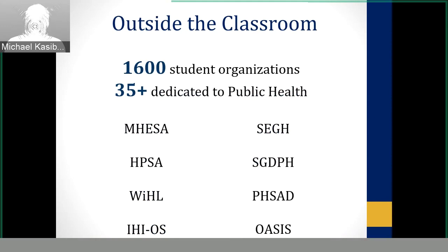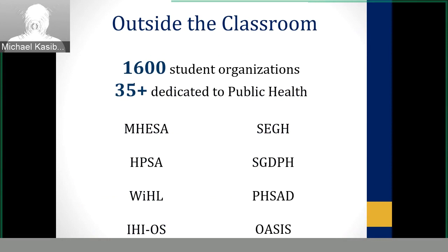Outside the classroom, the University of Michigan has over 1,600 student organizations — there's literally something for everything. Over 35 are dedicated specifically to public health. Common ones joined by our cohort include the Michigan Health Executive Student Association, the Health Policy Student Association, Women and Health Leadership, the Institute for Healthcare Improvement Open School, students engaged in global health, sexual and gender diversity in public health, public health students of African descent, and the organization in aid of SPH international students.